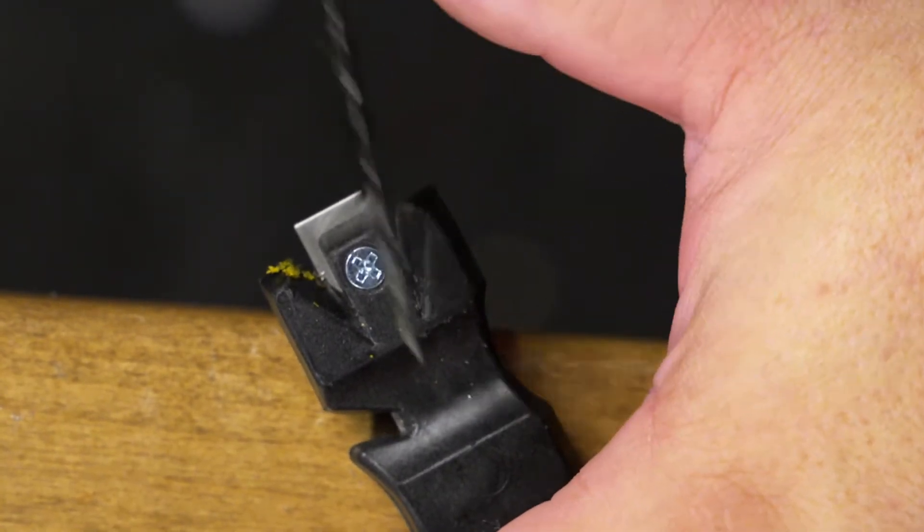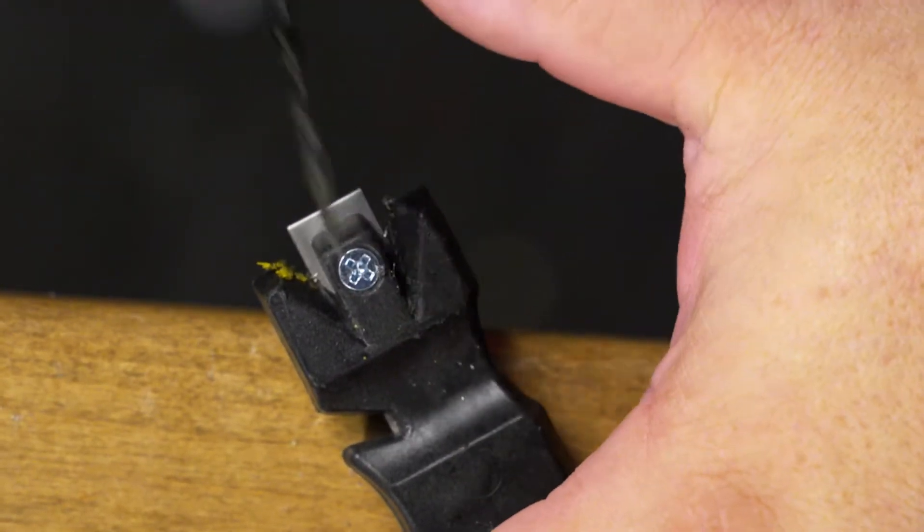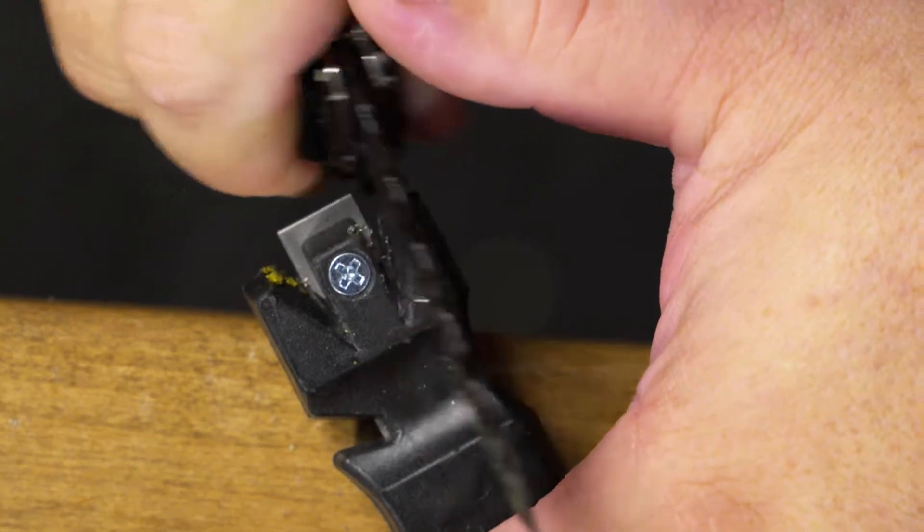When you've got a knife that hasn't been sharp in a while, you typically have a very rounded edge and it's very difficult to get that edge back on there because you have to worry about the angle.